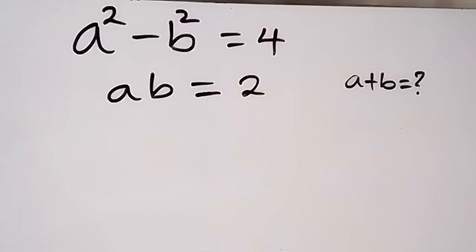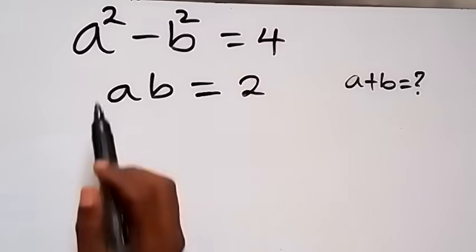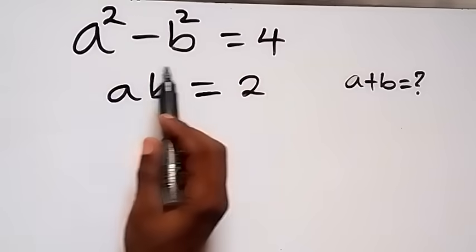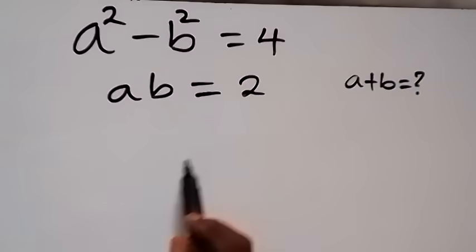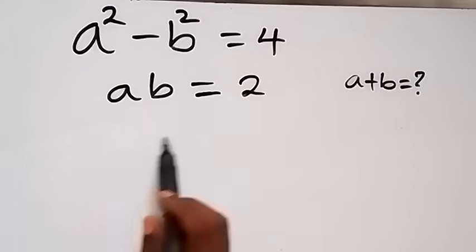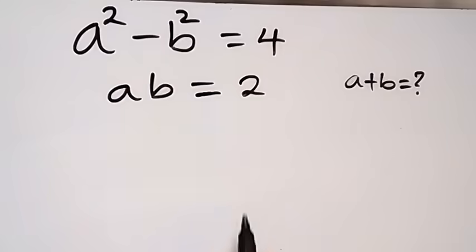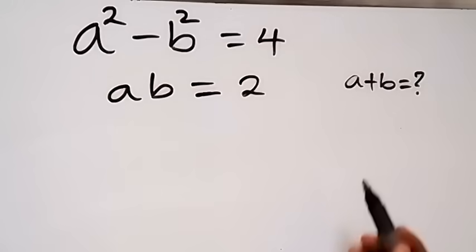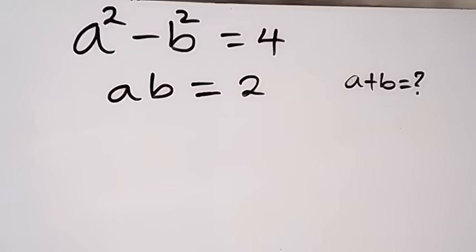Hello, you are welcome. We are solving this problem: a squared minus b squared equals 4, and ab equals 2. We are finding the value of a plus b in this Math Olympiad problem.